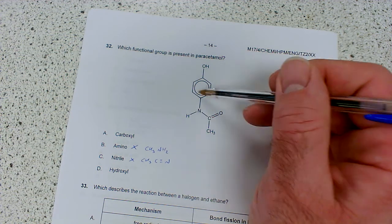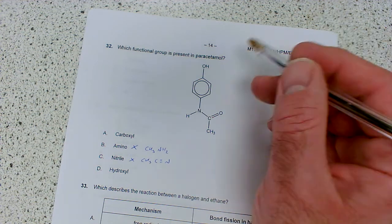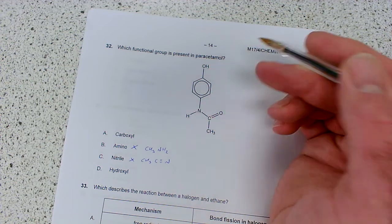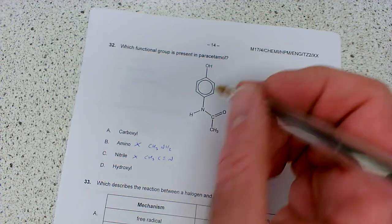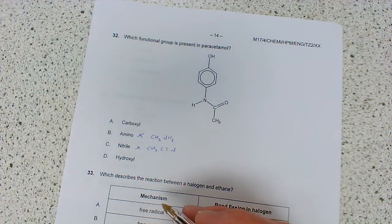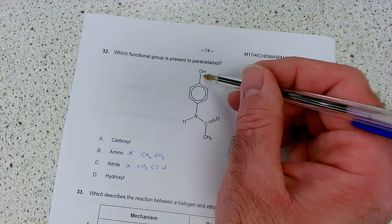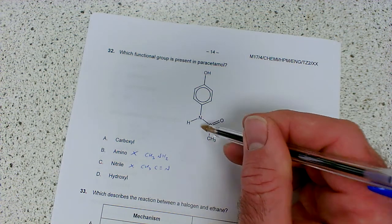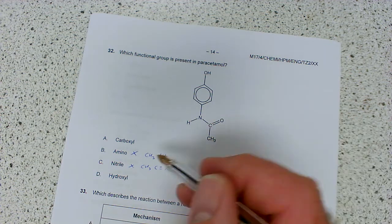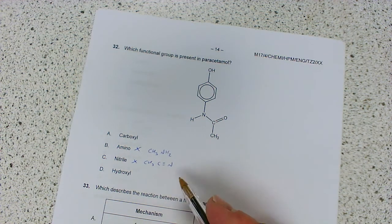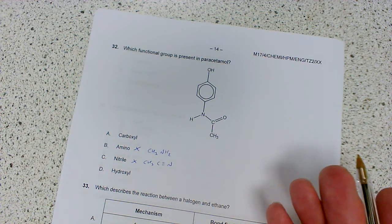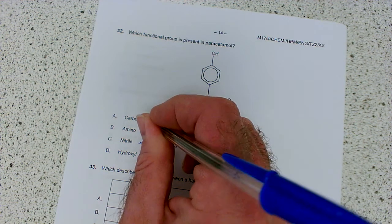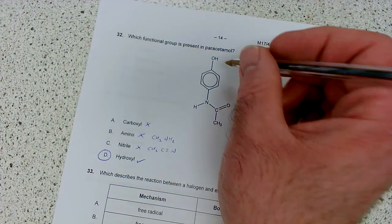Hydroxyl - as a chemist I'd call this a phenol, but you could say this is a benzene ring and that's a hydroxyl group, which is what you find in alcohols. I'm favoring hydroxyl over carboxyl, so the answer is D, hydroxyl.